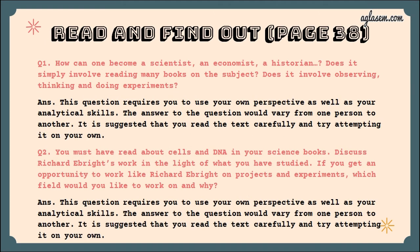Now let's turn to page number 38. Question number one asks: how can one become a scientist — does it involve reading books, observing, thinking, and doing experiments? Question number two asks you to discuss Richard's work in the light of what you have studied, and which field you would like to work on if given the opportunity. Both these answers require your own perspective and analytical skills, so answer them according to your own observation and choice.